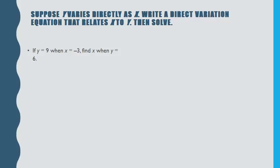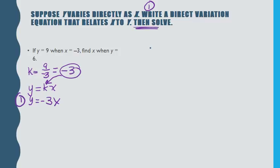Now we want to suppose that y varies directly as x, and we want to write this direct variation. In order to do this, the first thing we have to do is find k. So k is going to be this y over this x. So k is going to be 9 over negative 3, which is negative 3. So then we want to write the equation. The equation is y equals kx. This substitutes in for the k. So y equals negative 3x. So that's the first part of the equation.